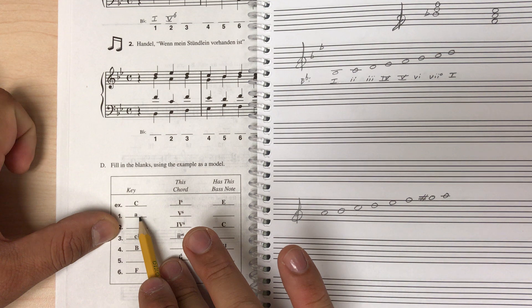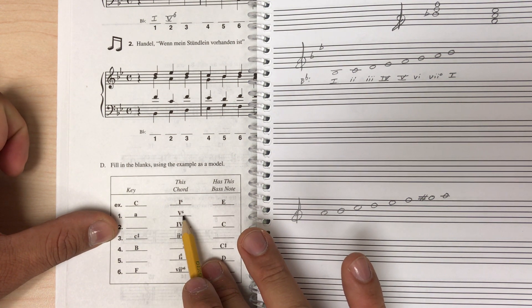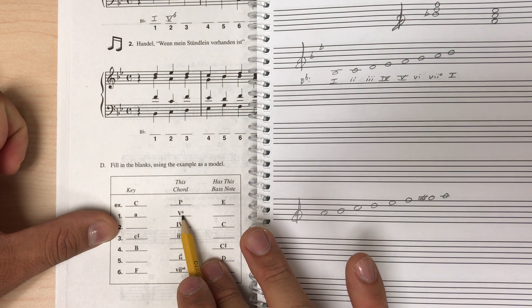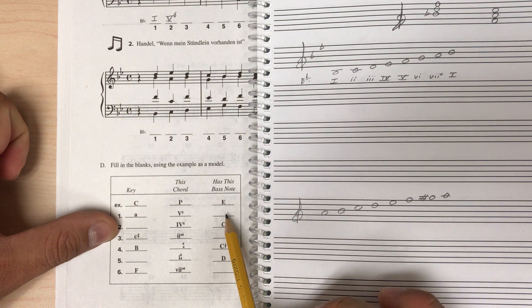Number one, they tell us that the key is A minor, and they tell us that this chord, V, VI, major V chord, and first inversion, and we need to figure out what the bass note of that chord is.